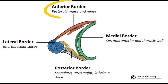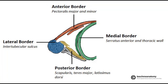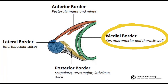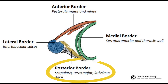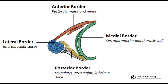Starting from the top, the anterior border — we have 'people,' so P is for pectoralis major and minor. Next is the medial border, which is 'spent,' meaning serratus anterior, and then the thoracic wall which the serratus anterior covers. Then the posterior border is 'time,' meaning teres major as the main border, with latissimus dorsi also in the same region. Finally, the lateral border is 'isolated,' and the I is for the intertubercular sulcus on the humerus.